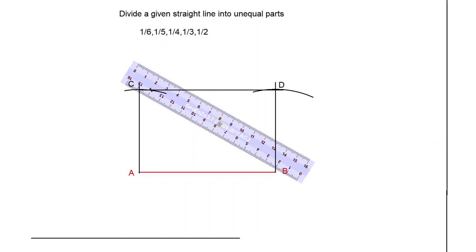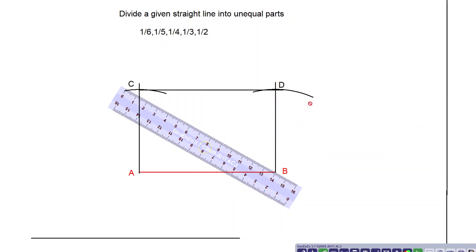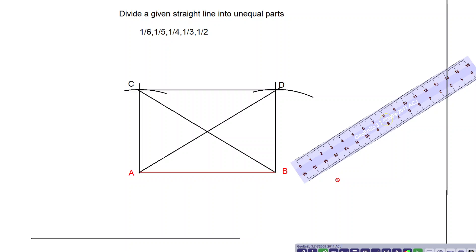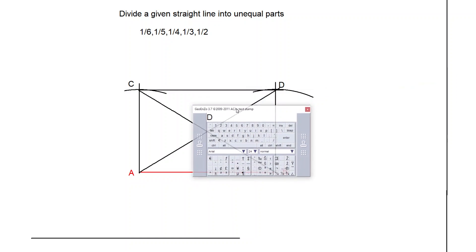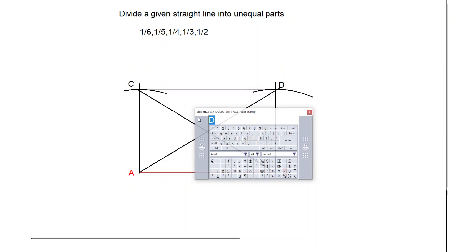So I have drawn the diagonals AD and BC. Now they are intersecting, say at a point. So that point name I am giving as E. Let us say they are intersecting at point E.